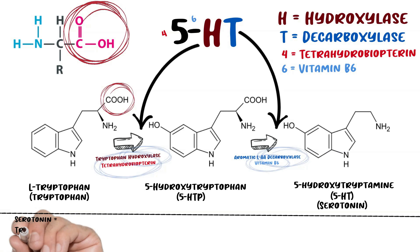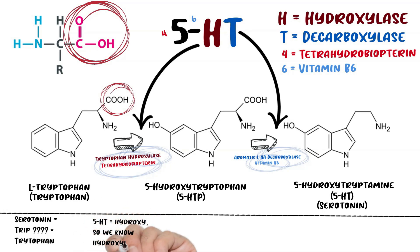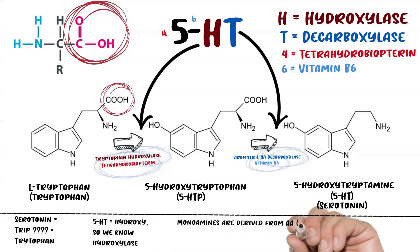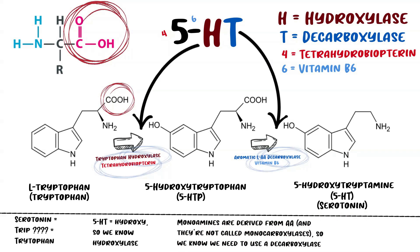To recap: serotonin is derived from tryptophan — remember this because serotonin is so similar to drugs that make you trip. We need to turn tryptophan into 5-hydroxytryptamine, so the first step is a hydroxylation via tryptophan hydroxylase. The second step is taking off the carboxyl group via aromatic amino acid decarboxylase, because monoamines only have amines, not the carboxyl group. For the cofactors, remember 4-5-6: four is for tetrahydrobiopterin, and six is for vitamin B6.